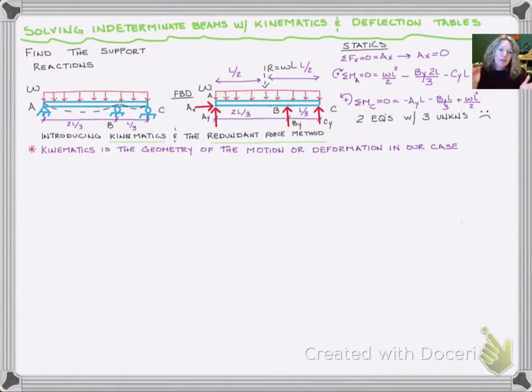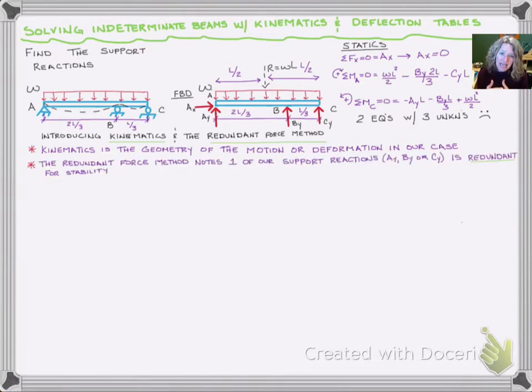Let's look at the deformation. It would have just been a big smile from A to C, but with that roller at B, it gets pushed back up to zero displacement at B. With the redundant force method, we're saying one of the extra supports is redundant. We don't need it for stability. We could get rid of BY or CY and still be stable.